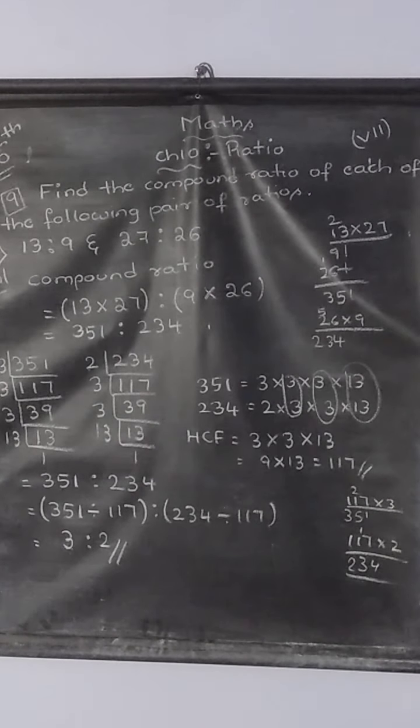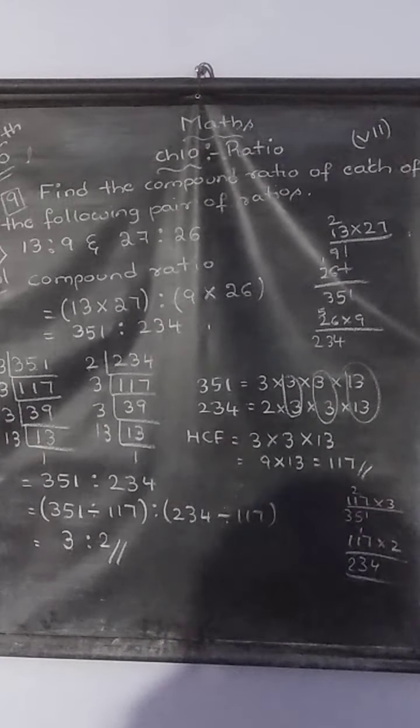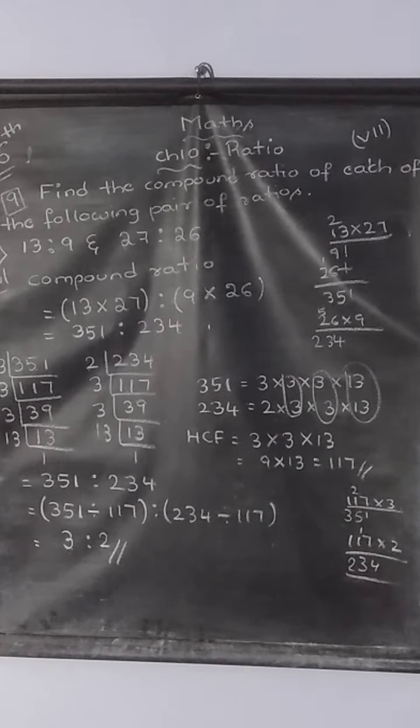Children, so what is the compound ratio in its lowest form? It is 3 is to 2. Is it clear children? So have you understood this problem? This first problem you just copy neatly to your classwork and make a practice of it. Thank you.